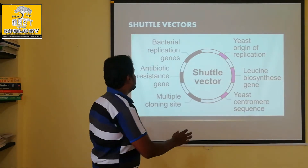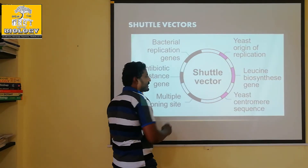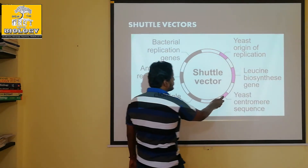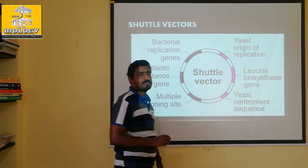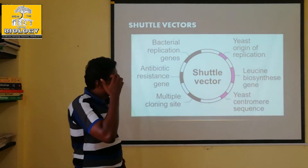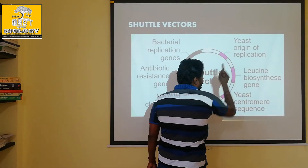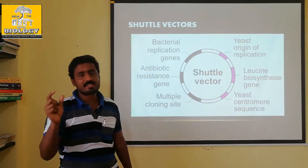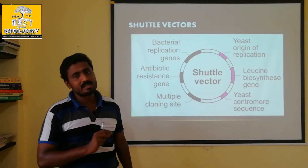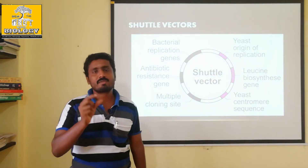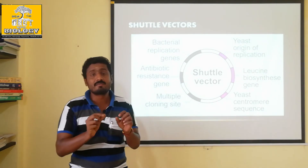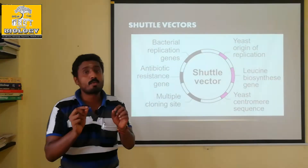In the plasmid, the three regions help for survival inside the bacteria. The other genes help for survival of that particular vector inside the yeast. Yeast will replicate. When a cell divides, the desirable DNA is replicated into two cells.